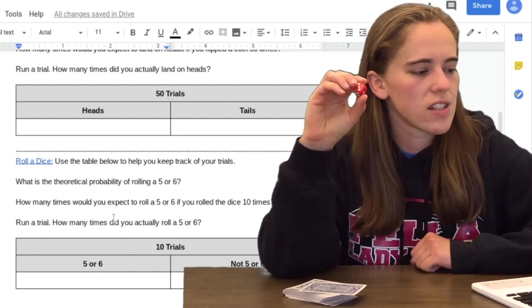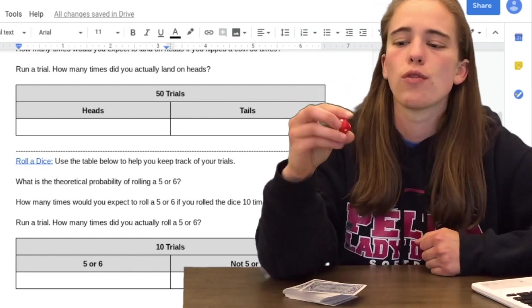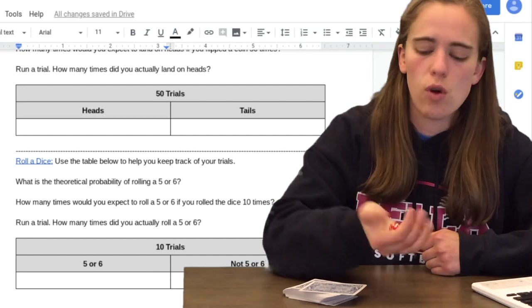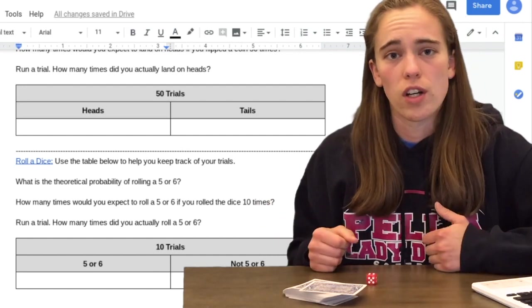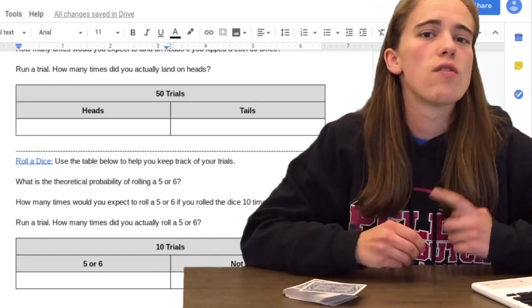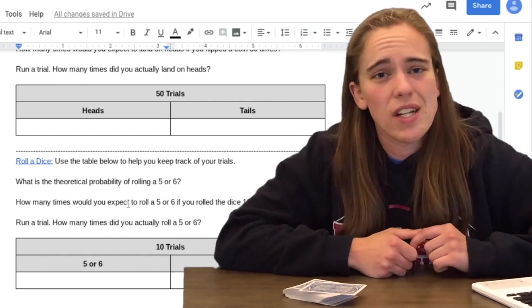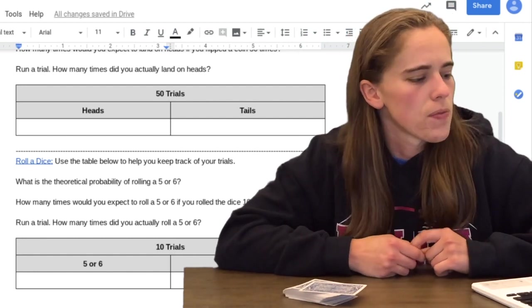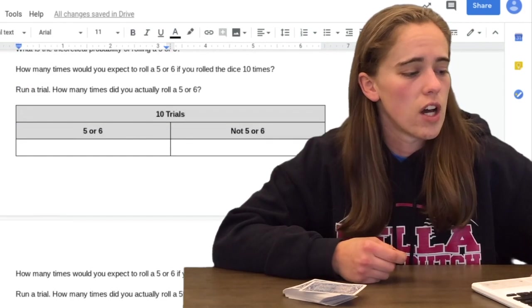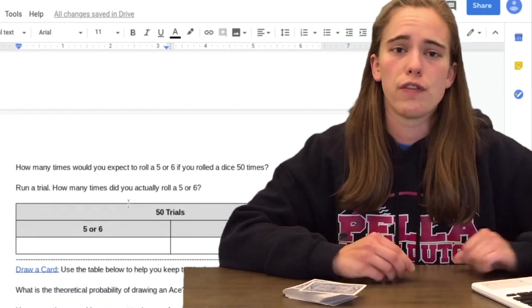So for the dice, the question's asking, what's the theoretical probability of rolling a five or a six? So if I roll this, I got a four. We're trying to figure out a five or a six count. You're going to figure out what would you expect to happen for 10 tries, then you're going to actually run the trial for a total of 10 and then you're going to do it for 50.